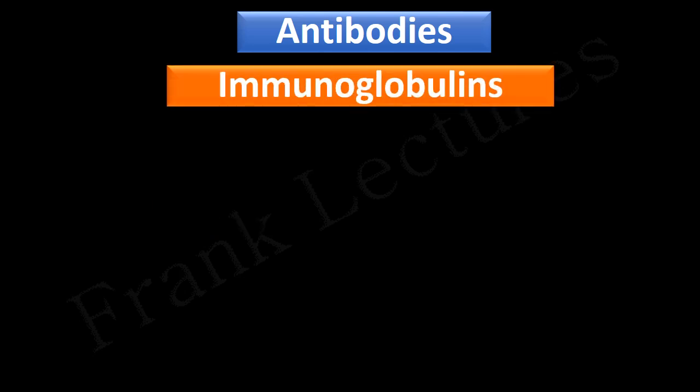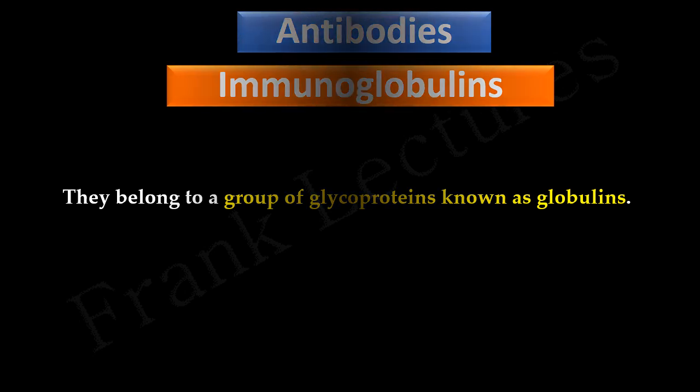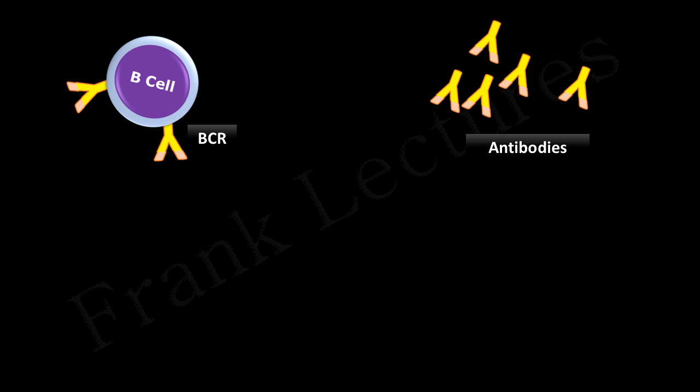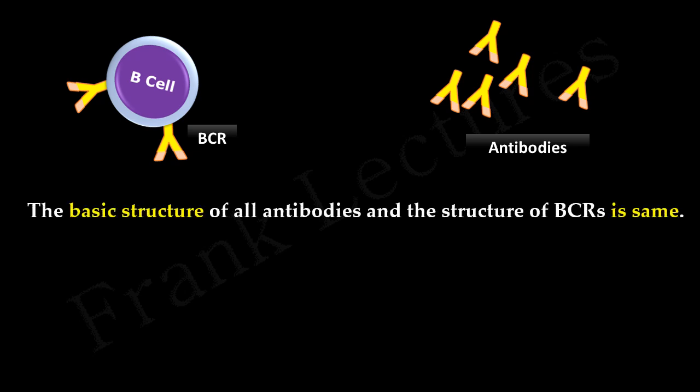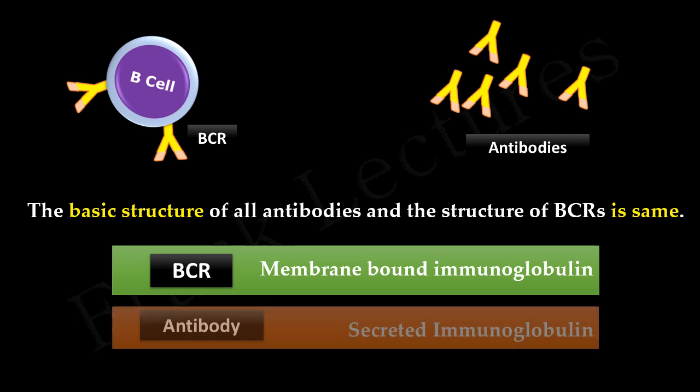Antibodies are also known as immunoglobulins. This is because they belong to a group of glycoproteins known as globulins. The term immune reflects that these glycoproteins play major role in immunity. The basic structure of all antibodies and the structure of B-cell receptors is same. So, B-cell receptors are also immunoglobulins. The difference is that B-cell receptor is a membrane-bound immunoglobulin, whereas antibodies are secreted immunoglobulins. Let us now study the basic antibody structure.